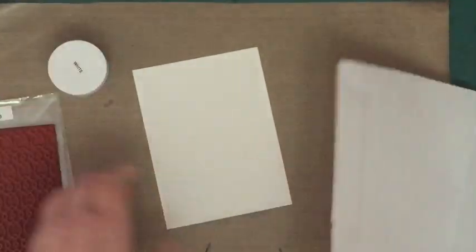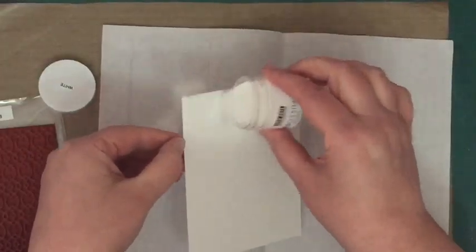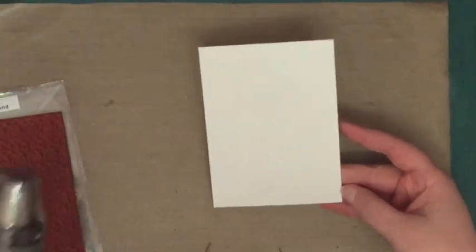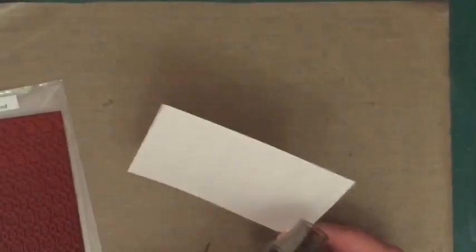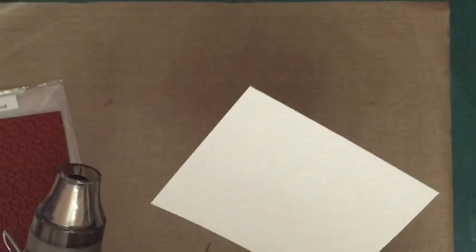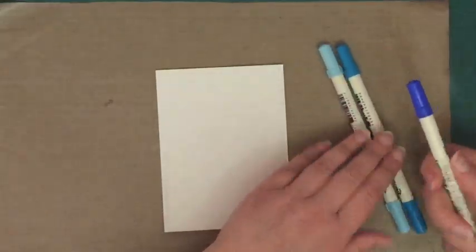Then I'm adding some white hero arts embossing powder and I'll be heat setting that with my heat gun. Now this card I'm going to be using my heat gun so many times I'm cutting most of them out of the video because it's really boring. So here I'm just finishing off and checking that I've heat set every bit.